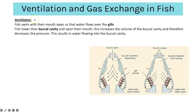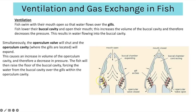Fish swim with their mouths open so water flows in over the gills, which are the site of gas exchange. The fish lowers their buccal cavity, opens their mouth, and that increases the volume of the buccal cavity — because volume increases, pressure decreases, causing water to flow in. Simultaneously the operculum valve shuts and the operculum cavity expands, causing an increase in its volume and a decrease in pressure.